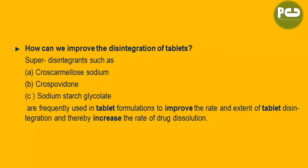How can we improve the disintegration of tablets? Super disintegrants such as croscarmellose sodium (CCS), crospovidone, and sodium starch glycolate (SSG) are frequently used in tablet and capsule formulations to improve the rate and extent of tablet or capsule disintegration and increase the rate and levels of dissolution.